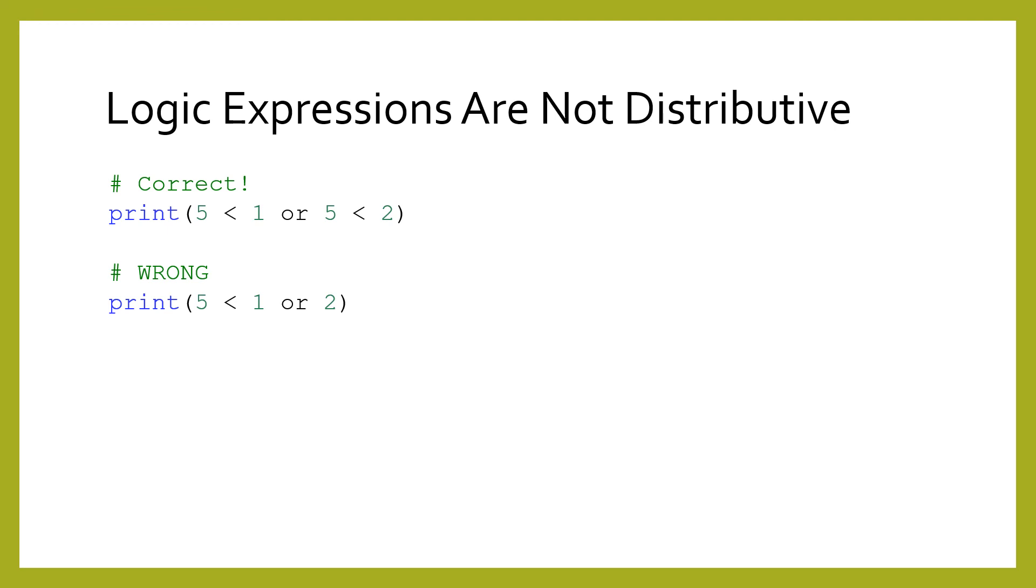A common beginner mistake is to think that you can distribute logical expressions. You might think that the code shown second asks if the number 5 is less than 1 or less than 2. But the or operator makes the 2 evaluated separately from the rest of the comparison. To properly ask this question, you need to write the first statement, with the less than operator repeated a second time. If you run the code shown, then the second printed value will be 2 instead of false, which you may find surprising. In a future lesson, we will learn why this happens. For now, just remember that you must be explicit when trying to use or and and with comparison operators.